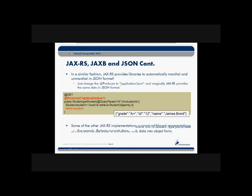How about doing the same kind of thing in JSON format? You can use the same student class, annotate it, and simply have our resource method producing application/json. We'll return a student class, and given the JAXB annotations it knows to marshal that information out in JSON format. One other thing to note is that we need JAX-RS and our JAXB environment to understand JSON, which is why those additional JAR files in the Jersey implementation are needed so that marshaling and unmarshaling can occur in JSON format.